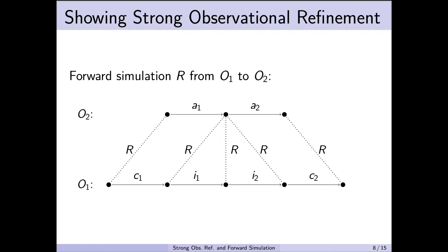As this diagram shows, the traces of the concrete system may end up with more states because the concrete system is more detailed than the abstract system. We cater for these differences in a proof of forward simulation by allowing the concrete system to stutter. I1 and I2 are stuttering steps that correspond to taking no step at the abstract level. For every concrete step, we must be able to produce an analogous step of the abstract system if the refinement relation holds between the pre-states; then it holds again between the post-states. For stuttering steps, we take a step of the concrete system and take no action in the abstract system.